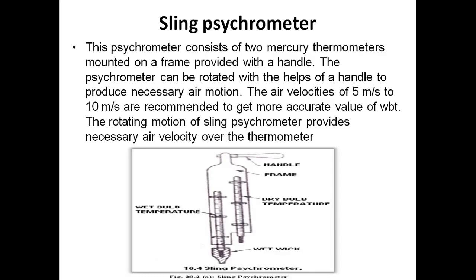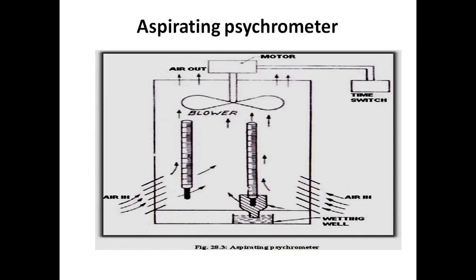A sling psychrometer is used in laboratories. It has a handle with a frame holding a pair of thermometers — one for dry bulb and one for wet bulb temperature — recording simultaneously. The handle is rotated to achieve air velocities in the range of 5 to 10 meters per second through the wet wick. An aspirating psychrometer uses an air blower arrangement to achieve the same recommended velocity range.